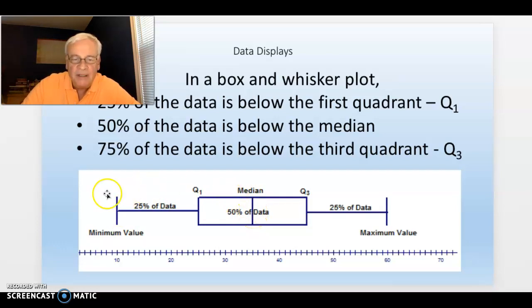And then 75% of the data is from the minimum value all the way up to this Q3, that third quartile. It divides the data into 25% chunks. And 50% of the data is in the middle, in that box between Q1 and Q3. Half of that data is there.